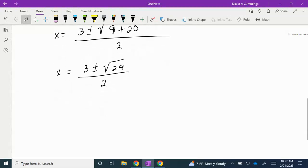And thus we have our two solutions. x can equal (3 + √29) / 2 or (3 - √29) / 2.